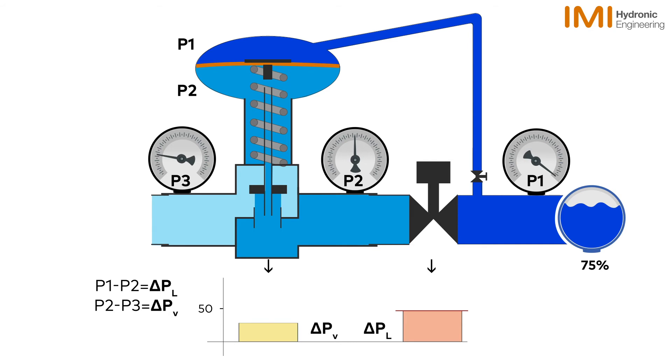The DPCV will constantly see a change in delta PL and act upon it as flow is reduced. It is able to accurately control delta PL until such a time as it reaches its minimum opening.